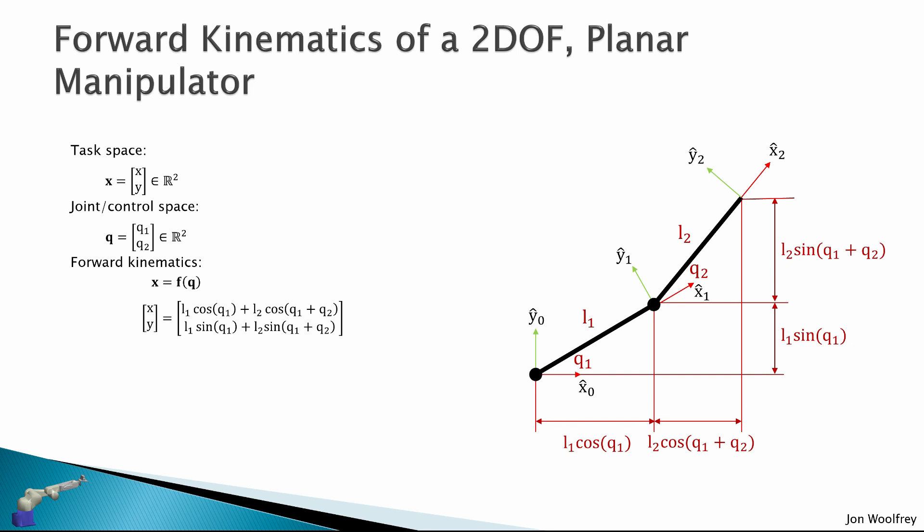Then the forward kinematics, X is a vector function of Q, will be L1 cos Q1 plus L2 cos(Q1 plus Q2). So this is X, and then Y will be L1 sin Q1 plus L2 sin(Q1 plus Q2). So this is Y. Simple.